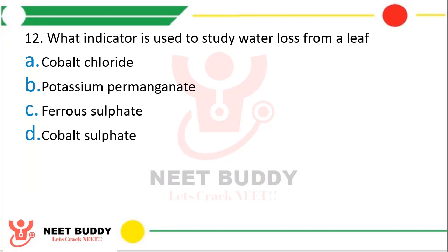Question 12: What indicator is used to study water loss from a leaf? Option A: cobalt chloride, option B: potassium permanganate, option C: ferrous sulfate, option D: cobalt sulfate. The correct answer is option A, cobalt chloride. As soon as cobalt chloride absorbs water, it changes its color, so it is used as an indicator to study water loss from a leaf.